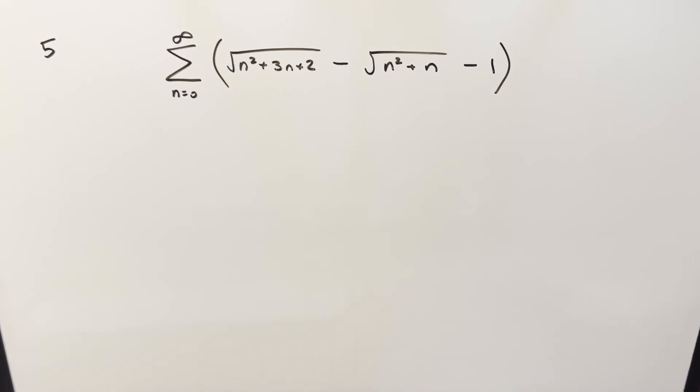Okay, we have here today an interesting sum. This one's from Berkeley Math Tournament 2022 number five. We have the sum from n equals zero to infinity of square root n squared plus three n plus two minus square root n squared plus n minus one.